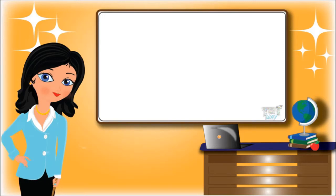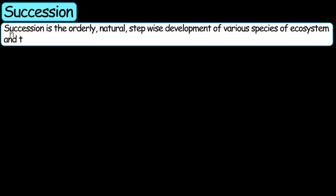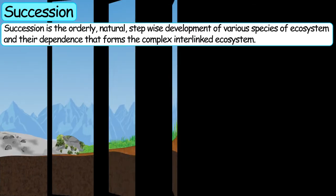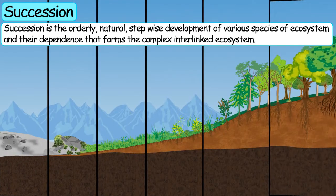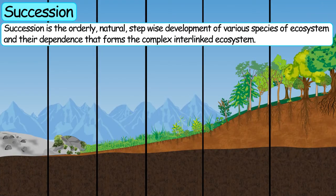Hi friends! Today we will learn a new concept, which is succession. Succession is the orderly, natural, stepwise development of various species in the ecosystem and their dependence that forms a complex interlinked ecosystem.